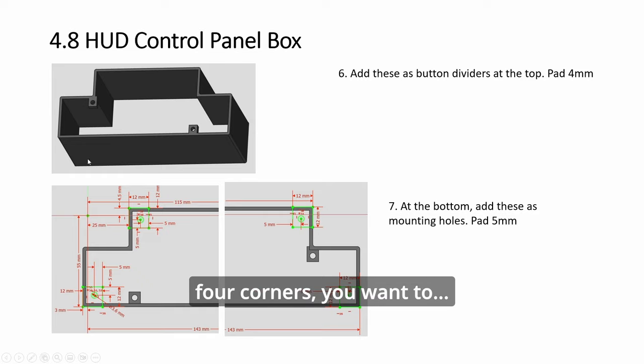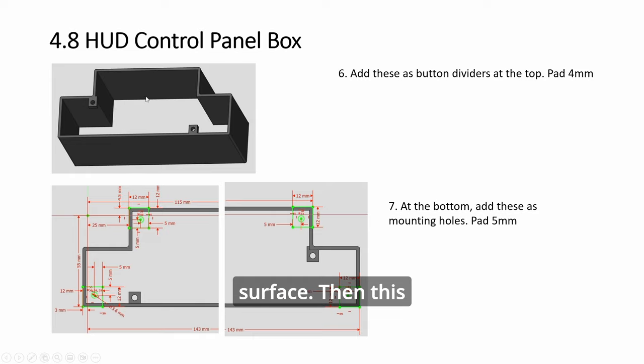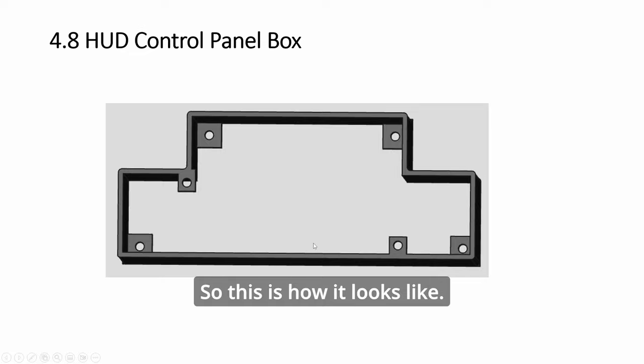You want to... This is like flipping, looking from below. Okay? The four corners. You have four square slots and holes to mount this bottom here to the console surface. Then this tool to mount the panel. So this is how it looks like.